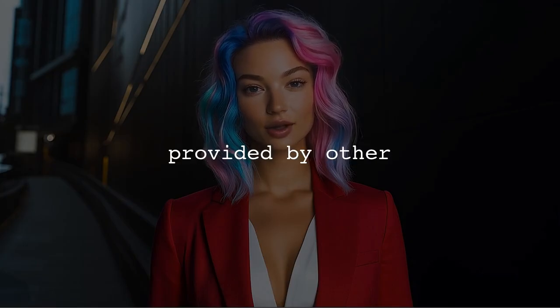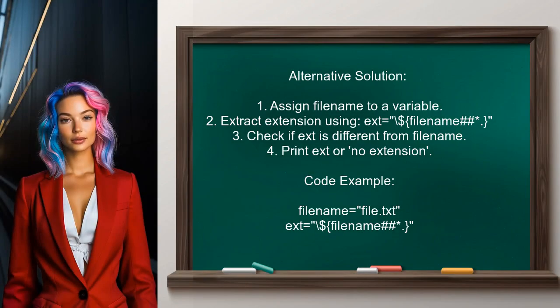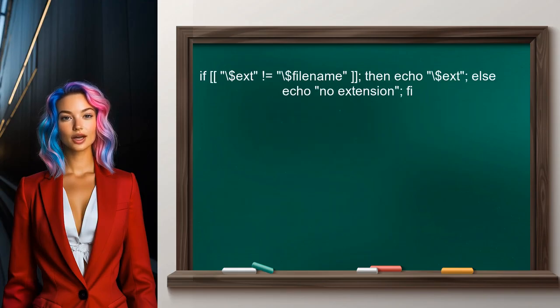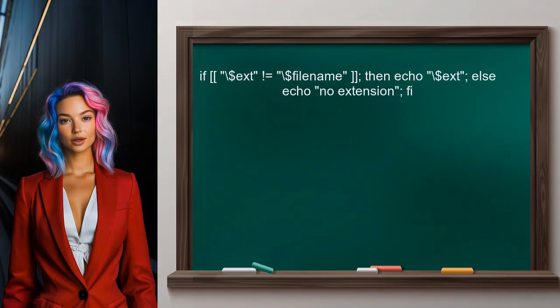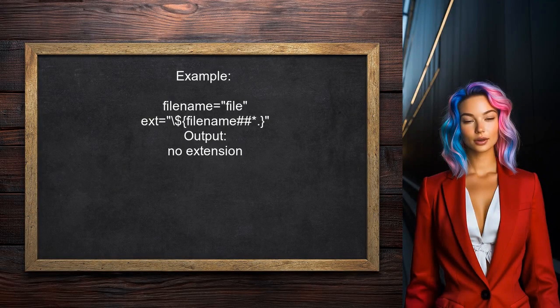An alternative approach involves checking if the extracted extension is different from the file name. First, assign the file name to a variable. Then extract the extension using the same method. If the extension is not equal to the file name, print the extension; otherwise, indicate that there is no extension. For a file named just 'File', the output will be 'no extension' since there is no period in the file name.